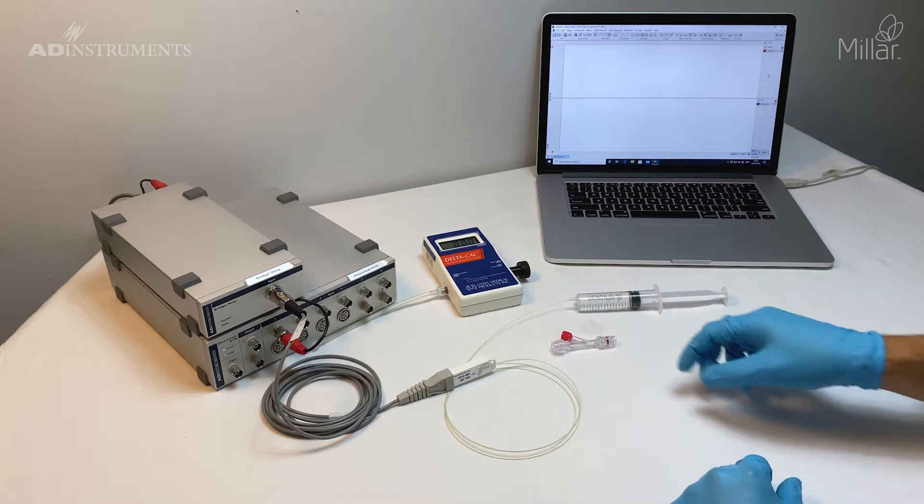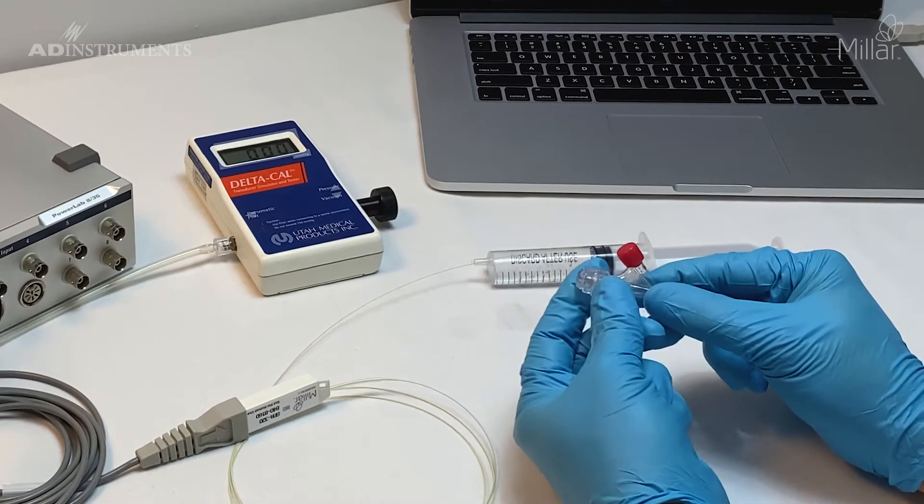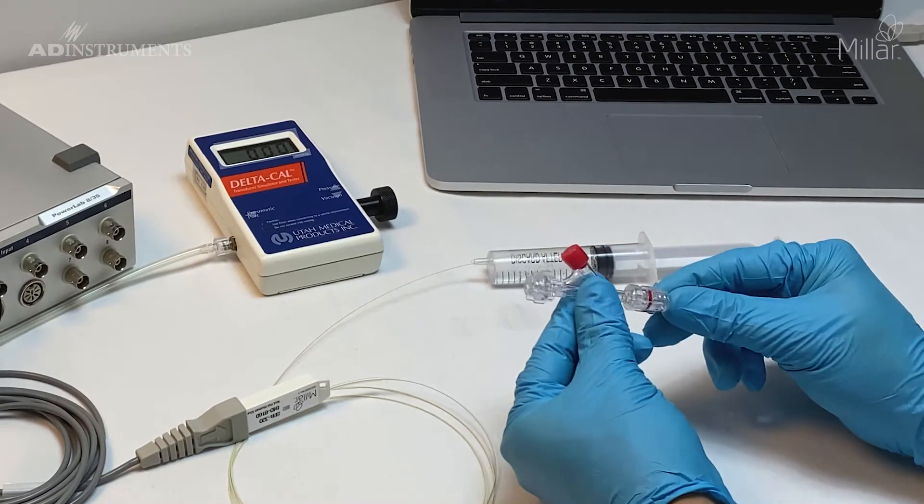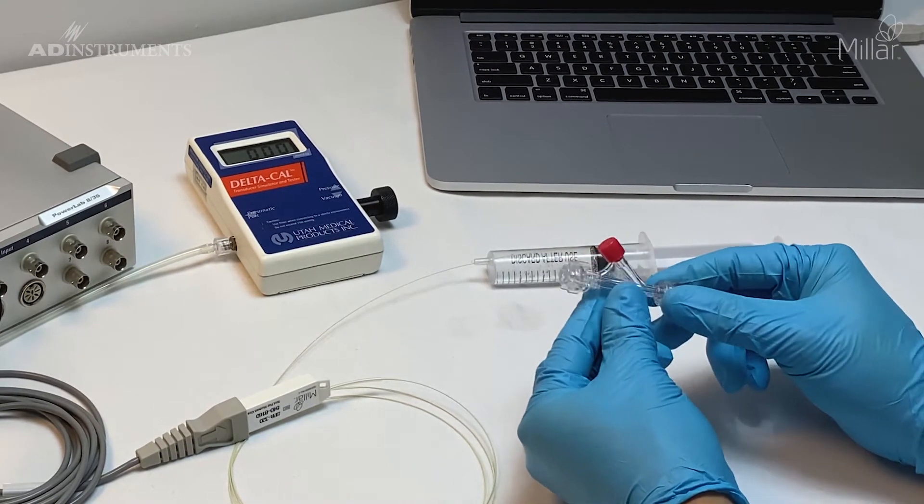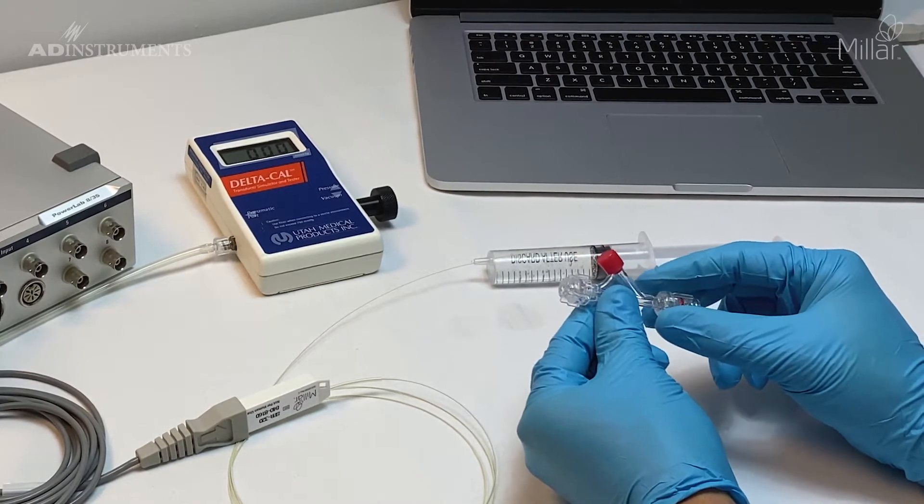To start, I'm going to fill the hemostatic valve, which has a valve on one end and is open on the other end with a cap with a port on top. I'll fill this up with saline first for the catheter.